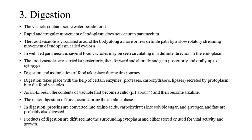Digestion takes place with the help of certain enzymes — proteases, carbohydrases, and lipases — secreted by the protoplasm into the food vacuoles. As in amoeba, the contents of the vacuole first become acidic, pH about 4, and then become alkaline. The major digestion of food occurs during the alkaline phase. Proteins are converted into amino acids, carbohydrates into soluble sugars, and glycogen and fats are probably also digested. Products of digestion are diffused into the surrounding cytoplasm and either stored or used for vital activity and growth.